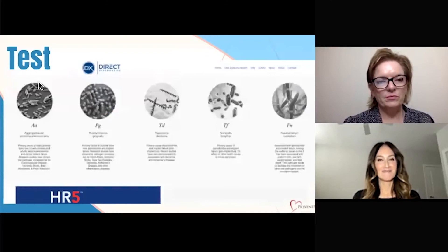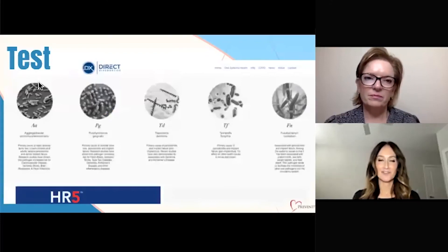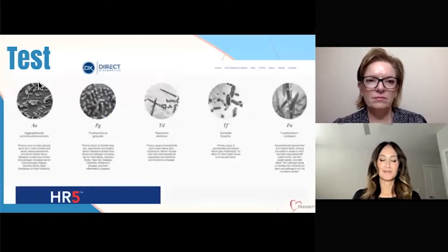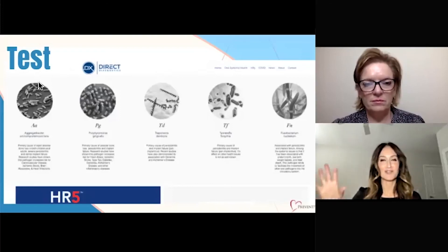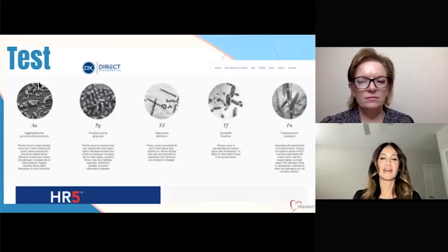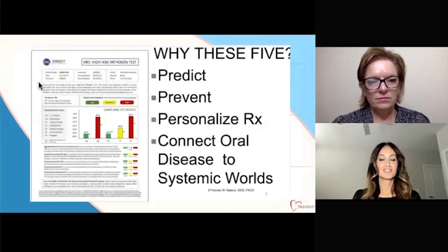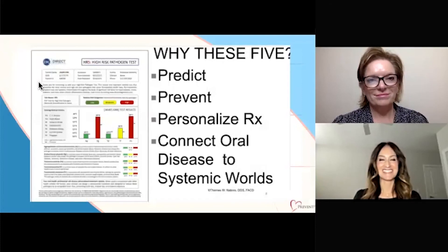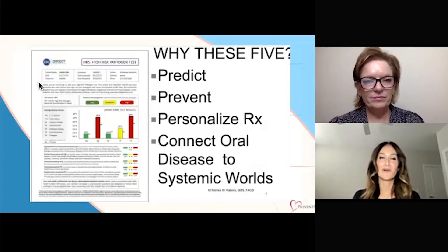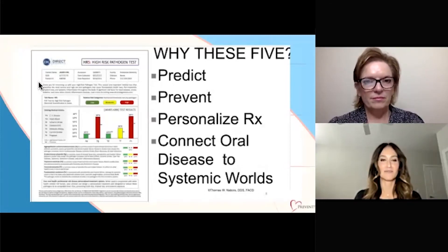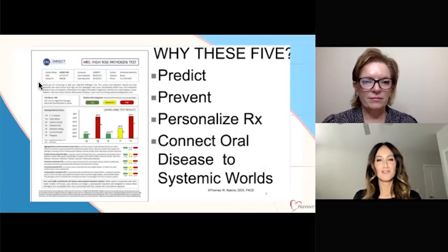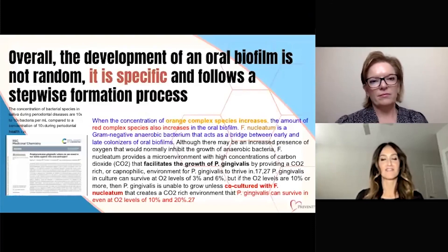We now have an amazing test called HR5. It tests for those specific red, purple, and blue complex bacteria — the five high-risk pathogens. Fusobacterium nucleatum is actually our bridge, sitting in that core species or orange zone. But if we have these five high-risk bacteria present, we have a very pathogenic biofilm. Why these five? Number one, we can help predict disease — just like our colleagues in medicine. We want to predict, prevent, and personalize. Knowing which strains to use and how to help each patient needs to be about personalized care, and looking at the oral-systemic side of how this affects the entire body.